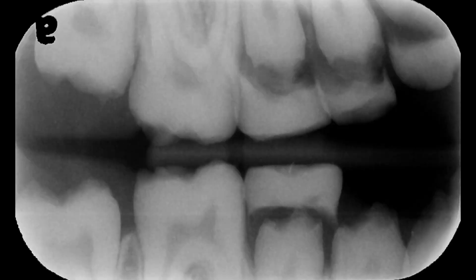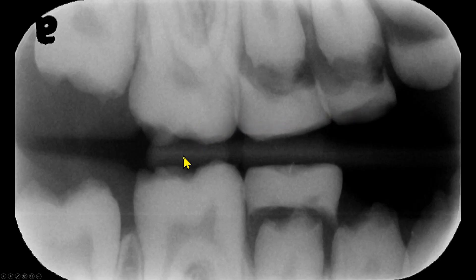On this bitwing radiograph, we see that the patient is in mixed dentition. On all the teeth, we do not see any evidence of enamel. There is no density difference between the dentine and what should have been an enamel layer.